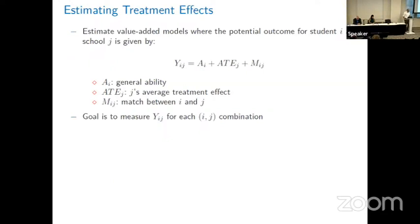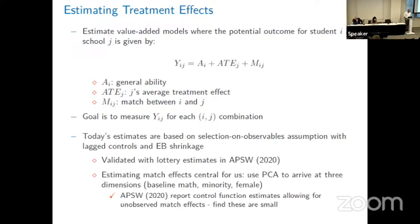I'm going to decompose potential outcomes for student i at school j into three components. The first is general ability, modeled using covariates. The second is a vertical dimension, indexed only by j — the average treatment effect of the school. And third, M_ij is the match effect — a horizontal dimension that matching theorists care about. We measure Y_ij for each student and school combination using a selection-on-observables assumption with lagged score controls and empirical Bayes shrinkage.